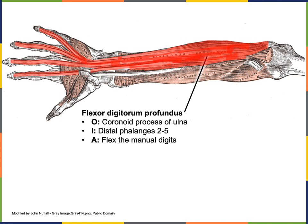The origin of flexor digitorum profundus is on the ulna at the coronoid process of the ulna. The insertion of flexor digitorum profundus is onto the distal phalanges of digits two through five. The action of flexor digitorum profundus is in the name — to flex the manual digits. It is the deep muscle that performs flexion of the manual digits.